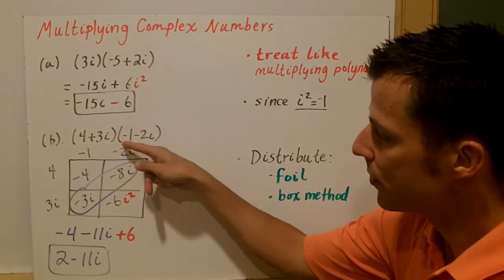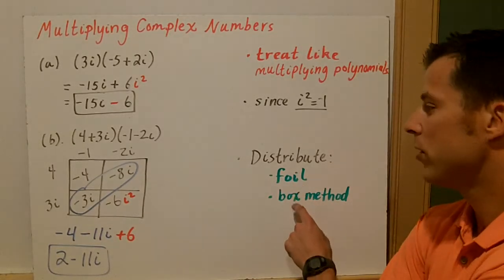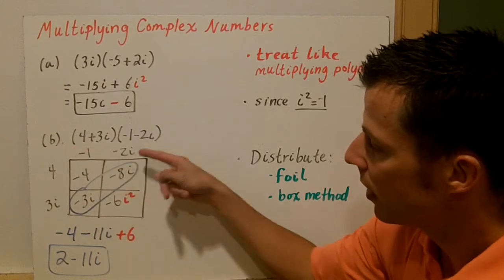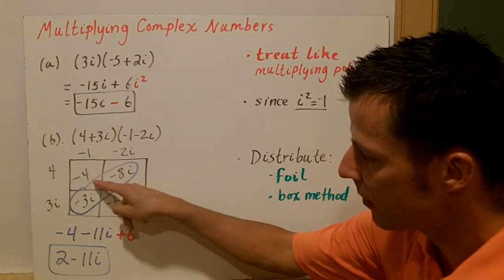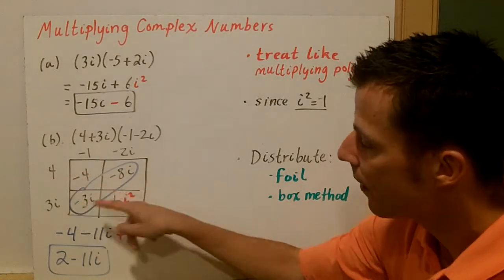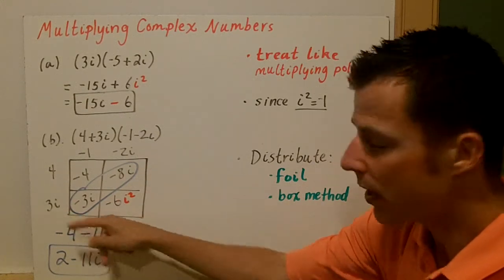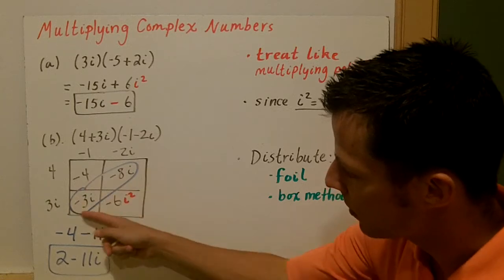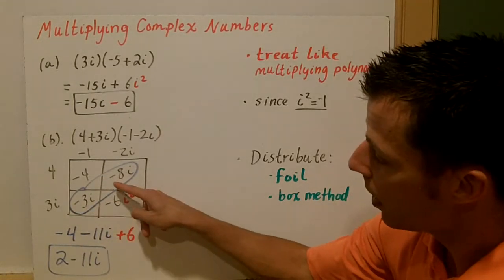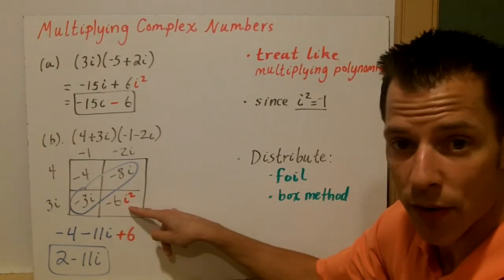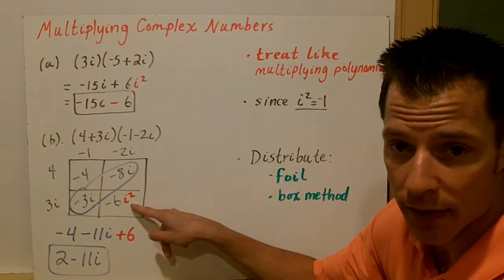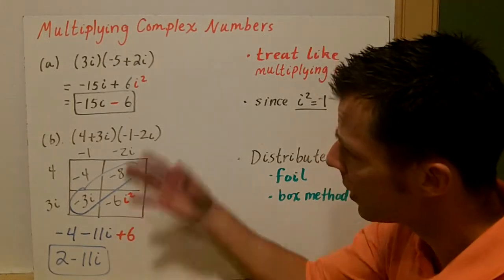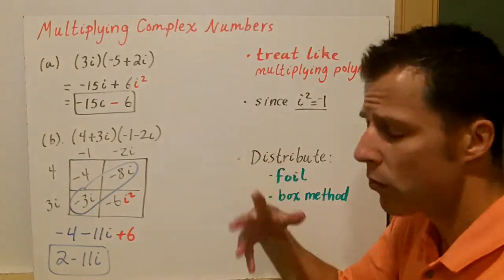In part b, we're actually multiplying two binomials — two imaginary numbers. You've got options: you can use FOIL, box method, or just distribute. Using the box method: 4 times negative 1 is negative 4; negative 1 times 3i is minus 3i; negative 2i times 4 is negative 8i; and negative 2i times 3i is negative 6i squared — I put i squared in red because I've got to be careful. Combine like terms: bring down negative 4, negative 3i plus negative 8i is negative 11i, and minus 6i squared becomes positive 6, because i squared is negative one and negative six times negative one is positive six. So I get 2 minus 11i.